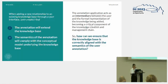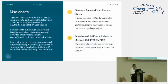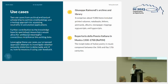The question is: how can we ensure that the knowledge base is correctly aligned with the semantics of the user annotation? Any layer interposed between the knowledge base and the user acts as a semantic lens that may introduce a semantic distortion. We started with two use cases from archival and text scholarship to develop a methodology and testing approach for assessing a certain neutrality in the annotation application's interface.